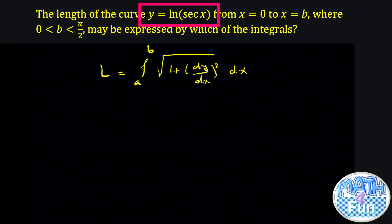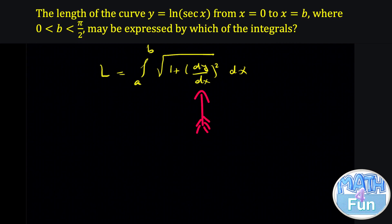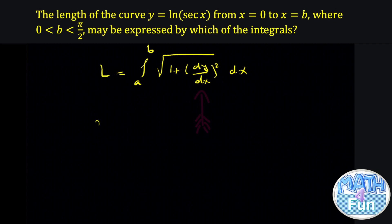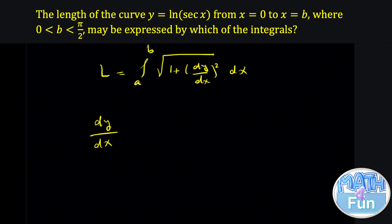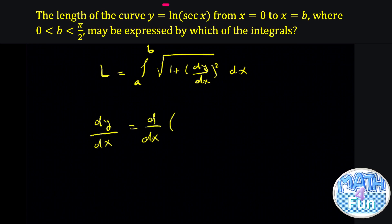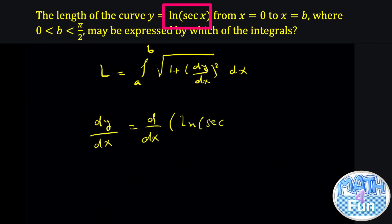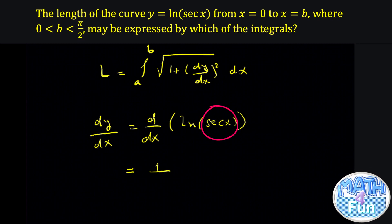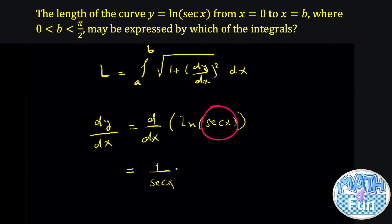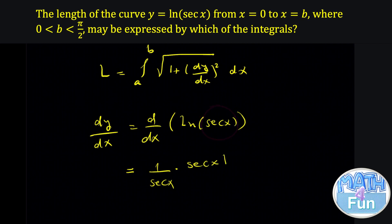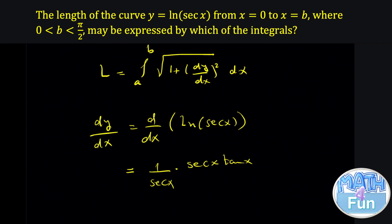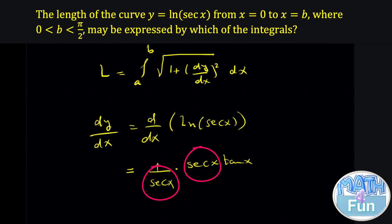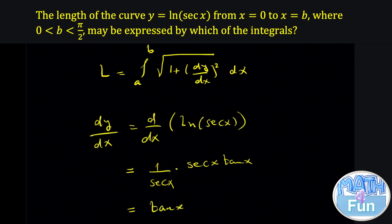Given the function y equal to ln of secant x, we need first to find dy/dx. According to the chain rule, the derivative of ln of secant x is 1 over secant x — the inside of the ln — times the derivative of the inside, which is the derivative of secant. The derivative of secant is secant x tangent x. Simplifying 1 over secant times secant tangent, secant and secant cancel, and you are left with dy/dx equal to tangent x.